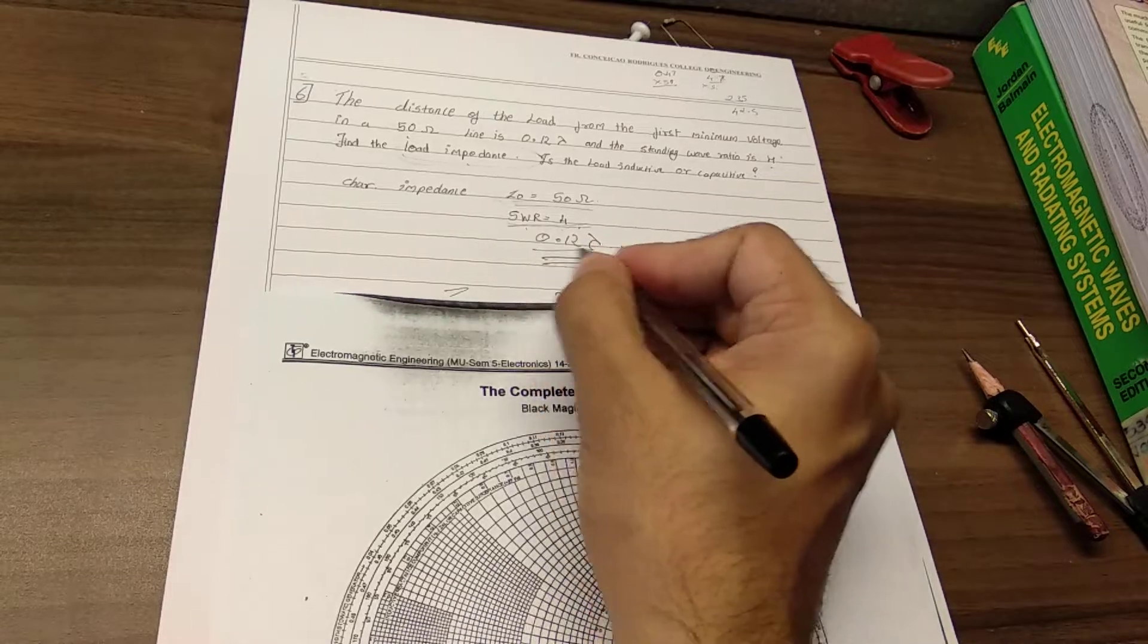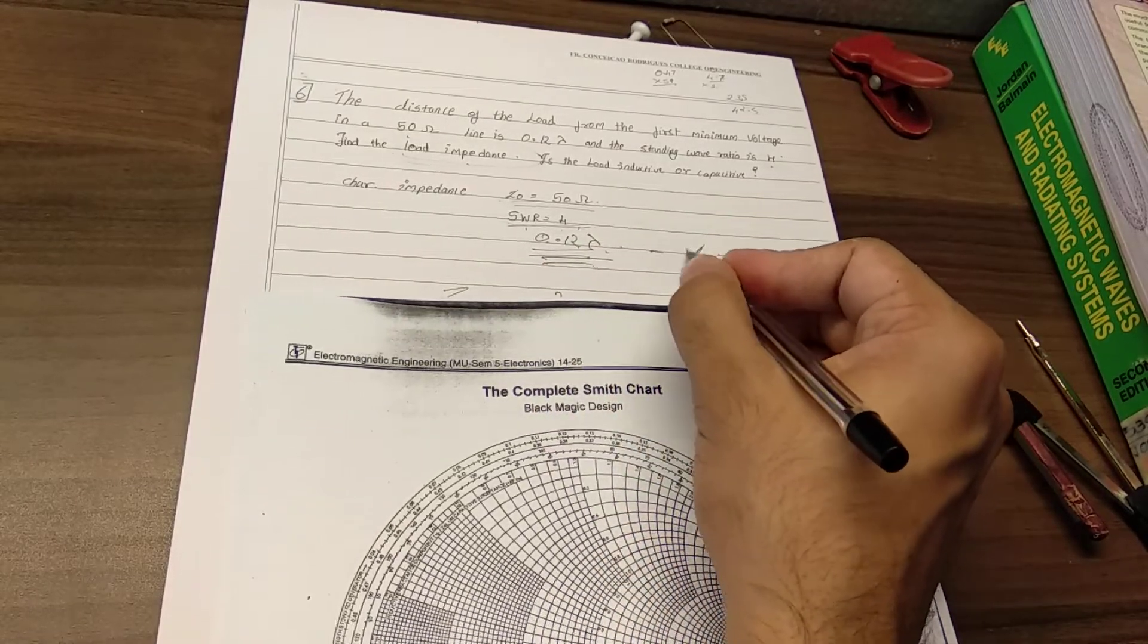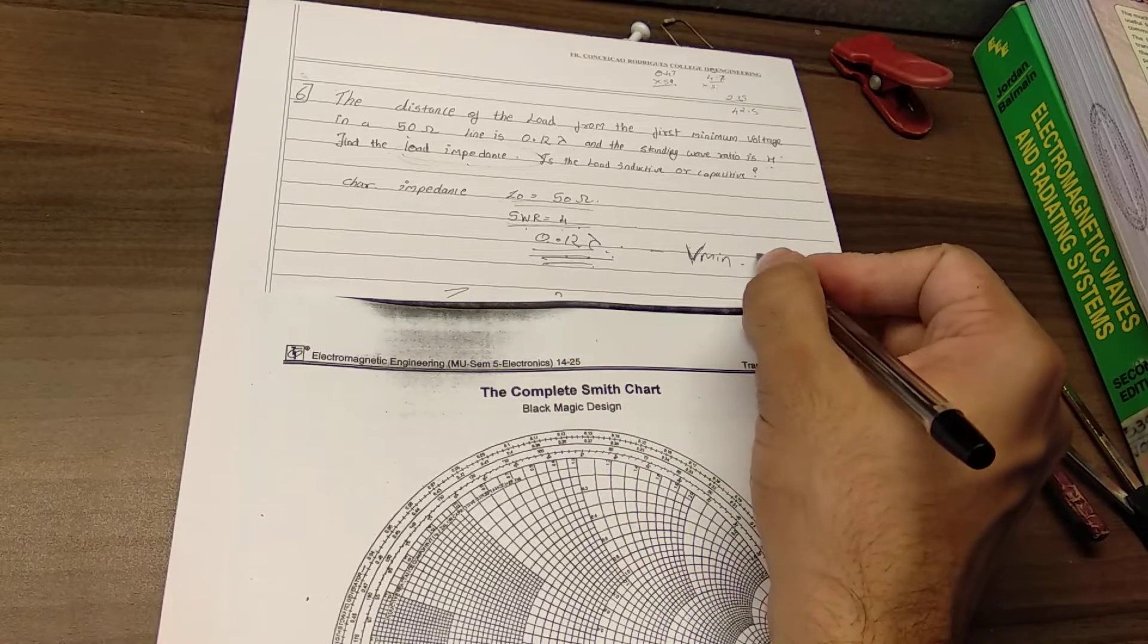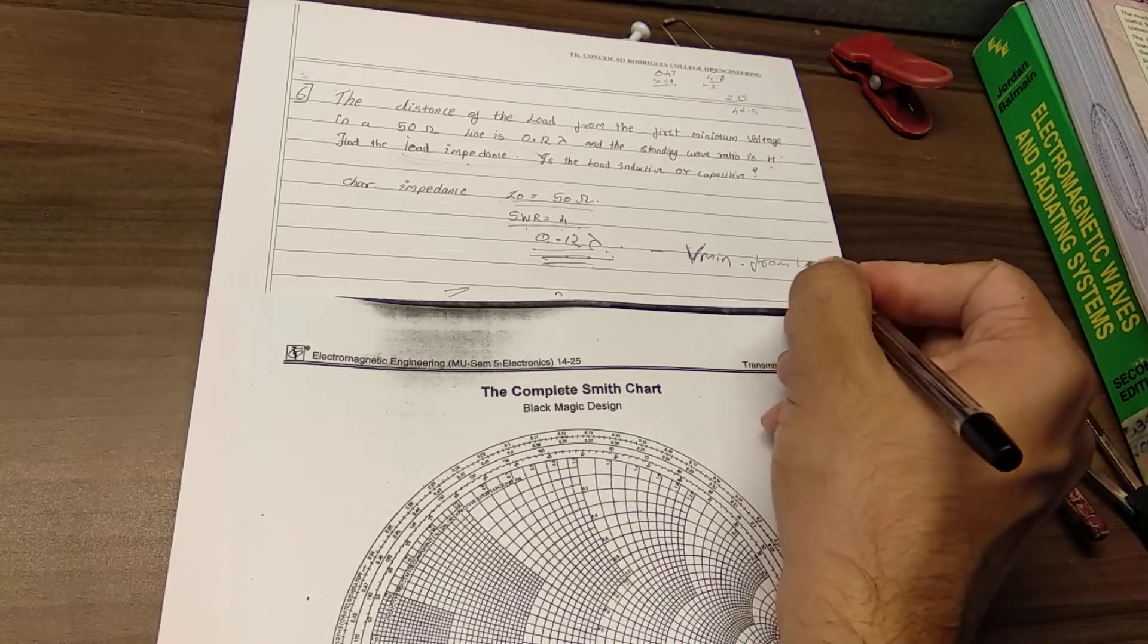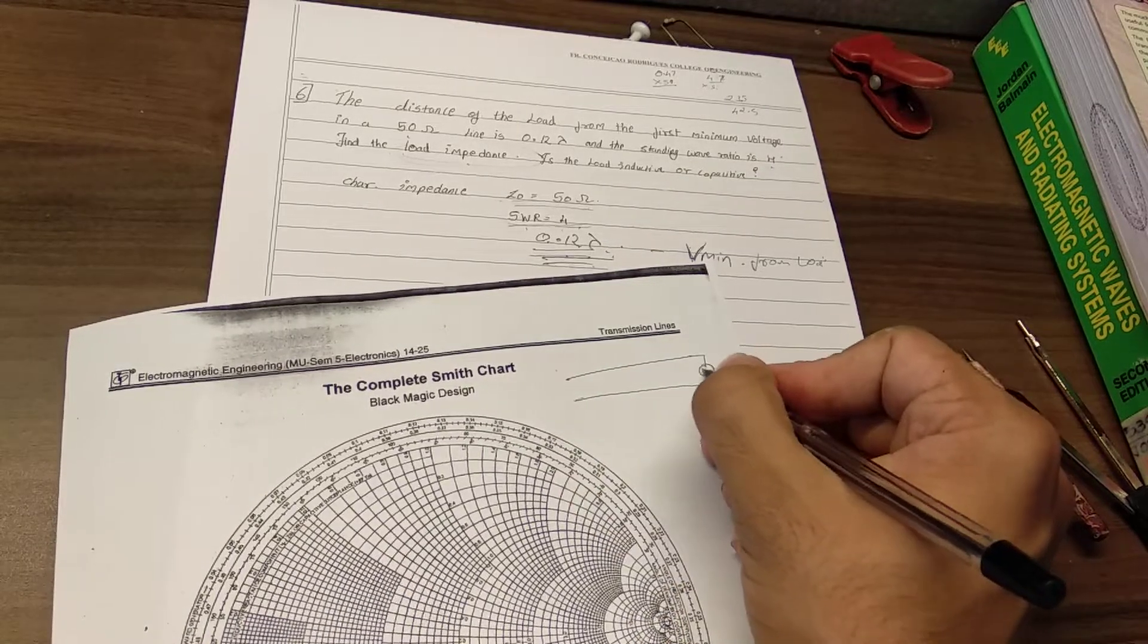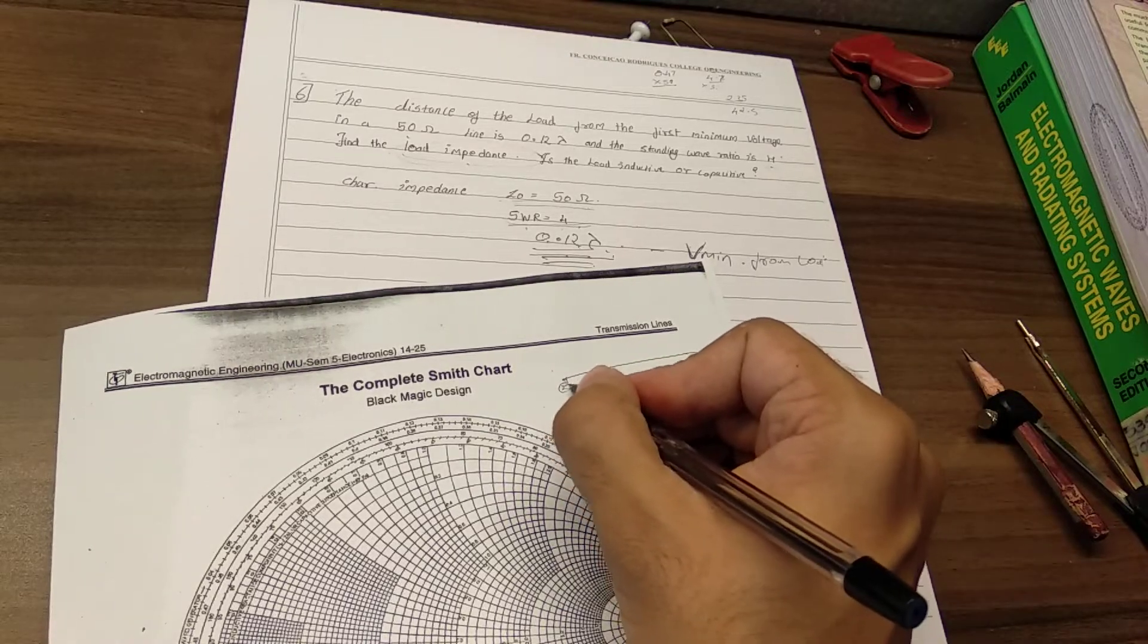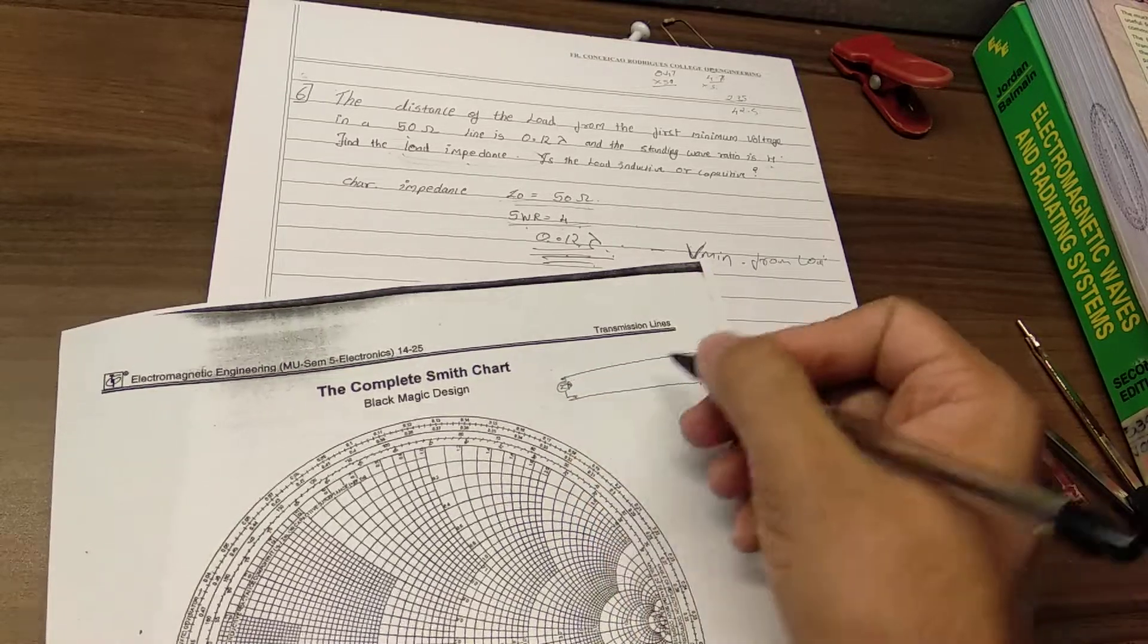And I've been told that 0.12 lambda Vmin is 0.12 lambda from the load. So if this is my transmission line and this is my load at the load, and this is my input or the source.